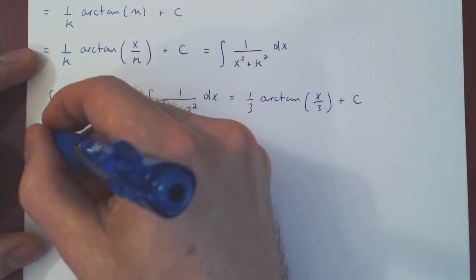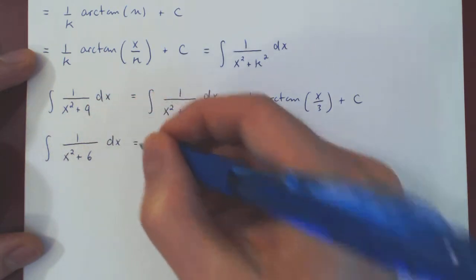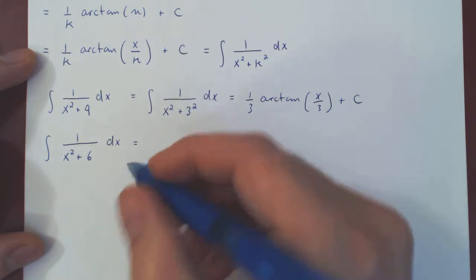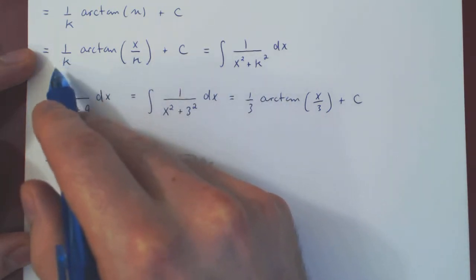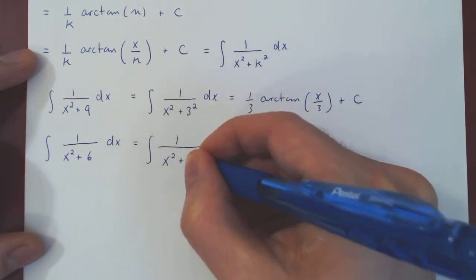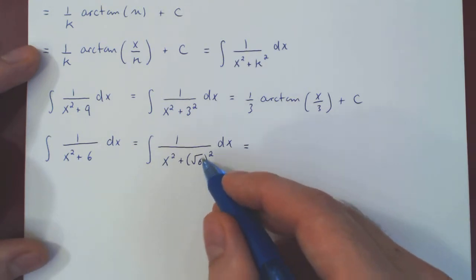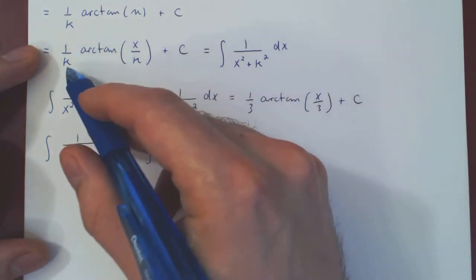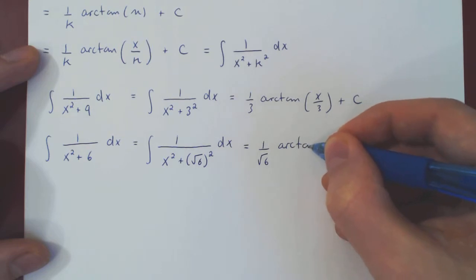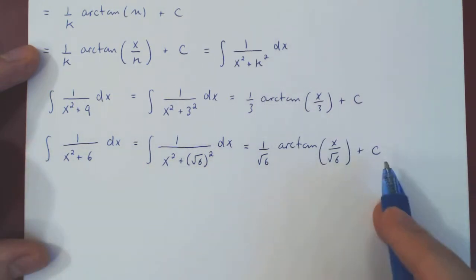But what if I ask for the integral of 1 over x squared plus 6 dx? Well, sure, 6 is not a perfect square when it comes to integers. But if you square the root of 6, it works fine. This result is true for any positive value of k. And so now, k is the square root of 6. So we have 1 over the root of 6 arctangent of x over the root of 6, and of course plus c. And that's it.